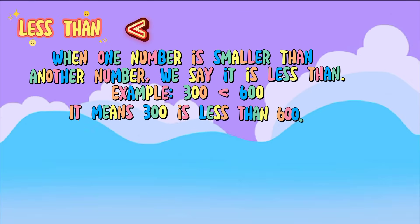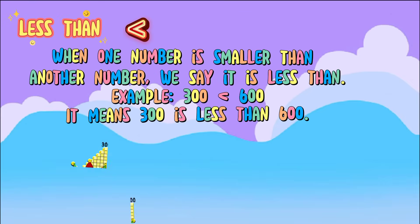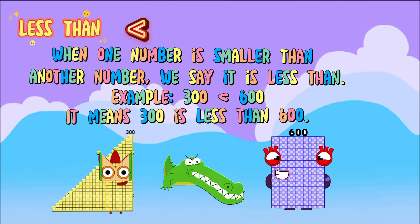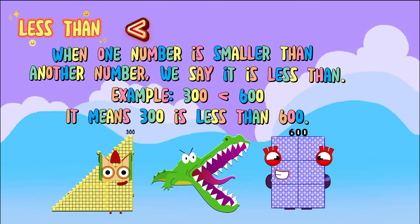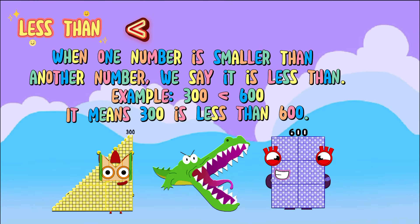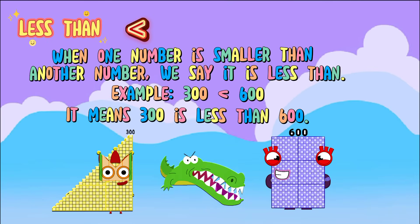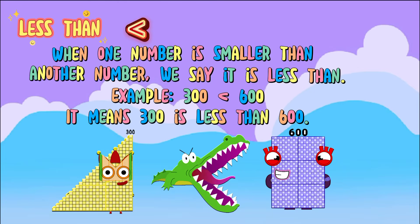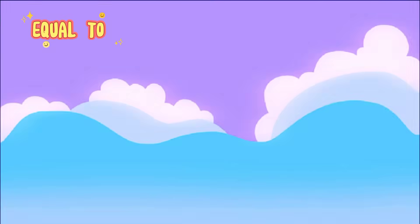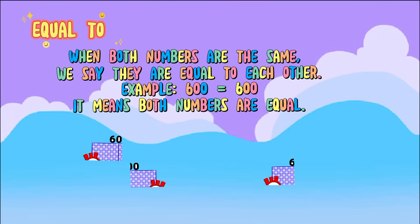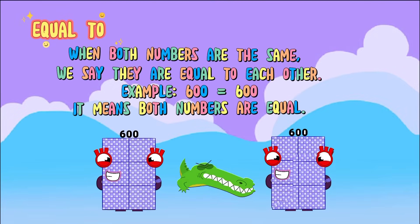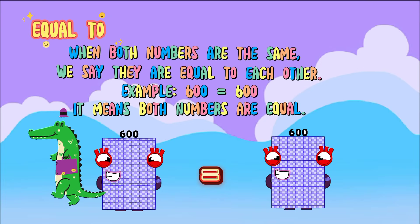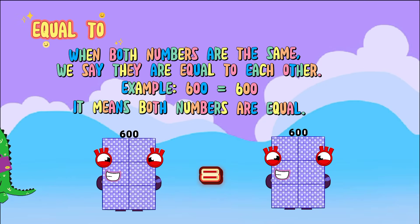Less than: when one number is smaller than another number, we say it is less than. For example, three hundred is less than six hundred. Equal to: when both numbers are the same, we say they are equal to each other — so there's no need for the alligator. Alligators, go away!